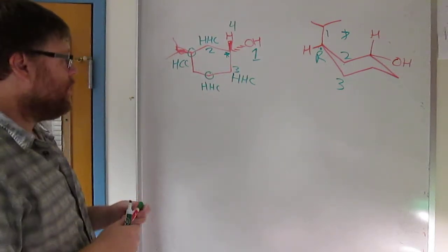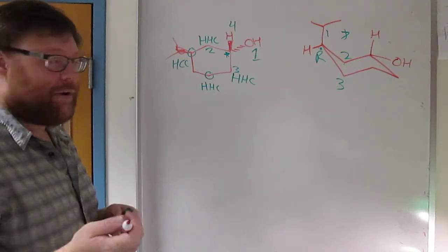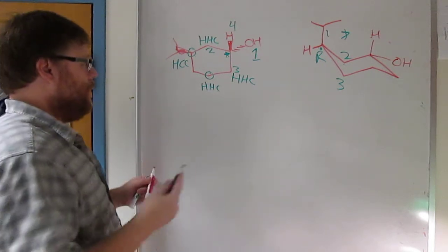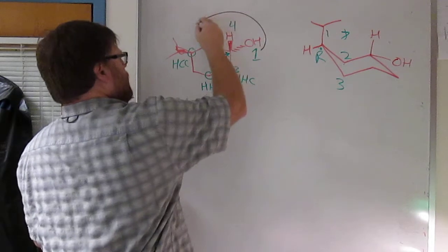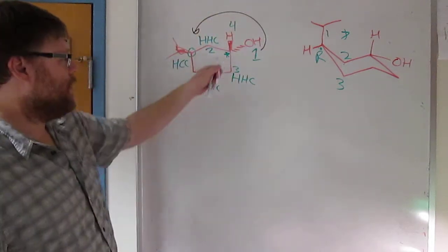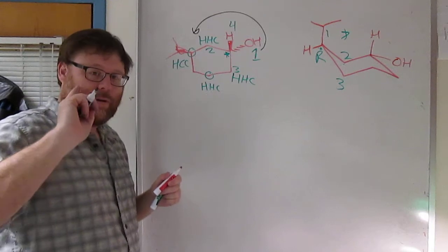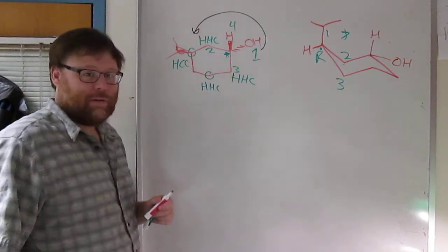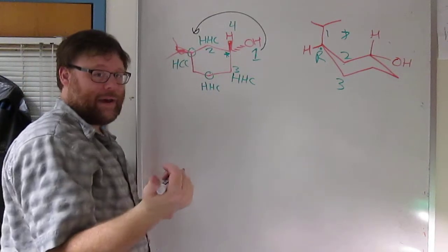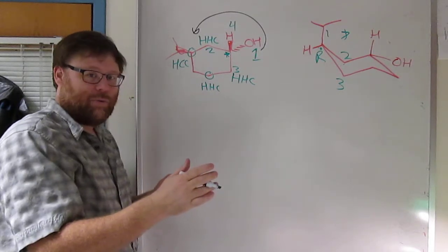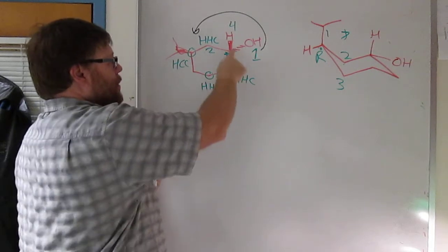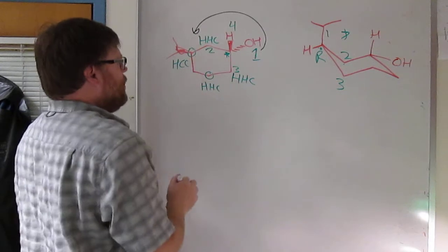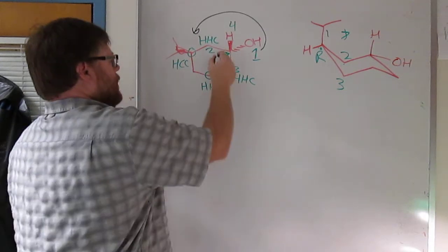So unfortunately, the low priority group is sticking out at you. So you can't simply just draw your circle. What you can do, and what I tend to do, go one to two to three, draw that circle, see how the rotation goes, and note that group four, low priority group four is sticking out at you. So this is a counterclockwise circle, but you have to take the opposite because the low priority group is out at us. The definition, the standard of Cahn-Ingold-Prelog is that priority group four is away. So if it's towards you, you have backwards. So counterclockwise, but because we're doing the reverse, this winds up being R.